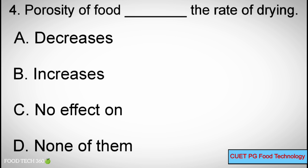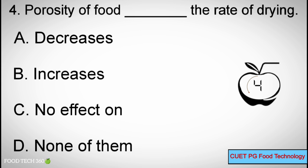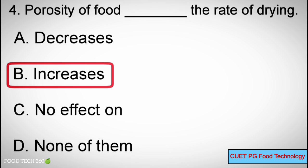Q4: Porosity of food _____ the rate of drying — A. Decreases, B. Increases, C. No effect on, D. None of them. Correct answer: B. Increases.